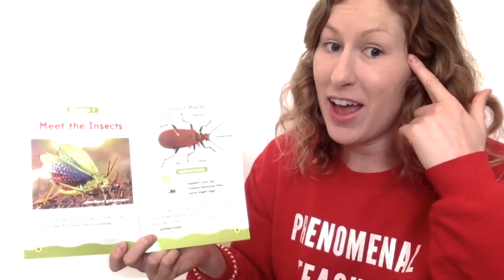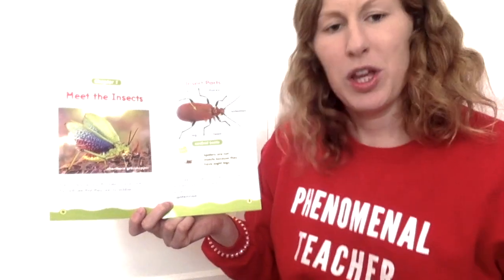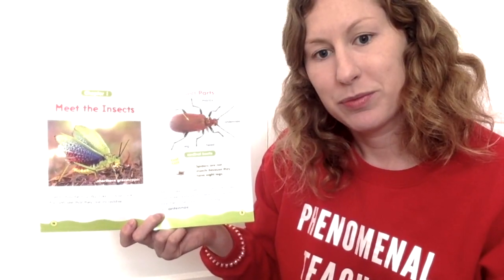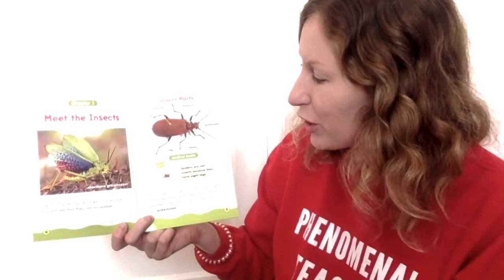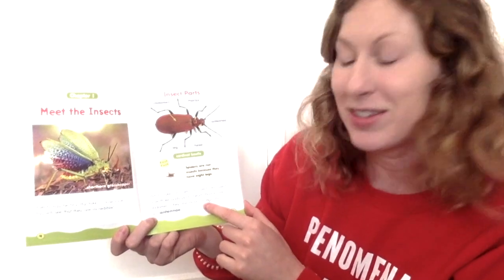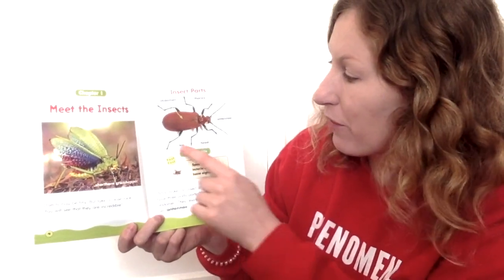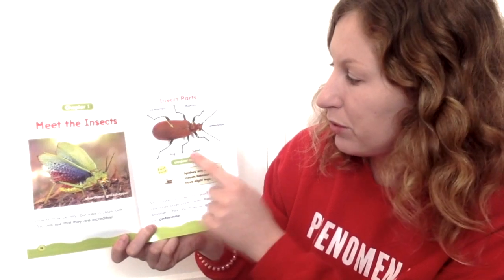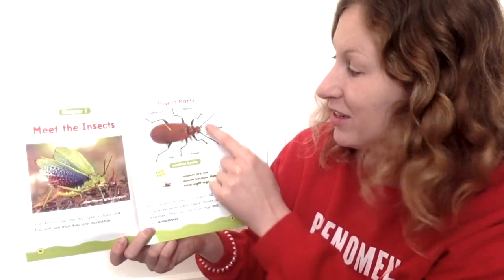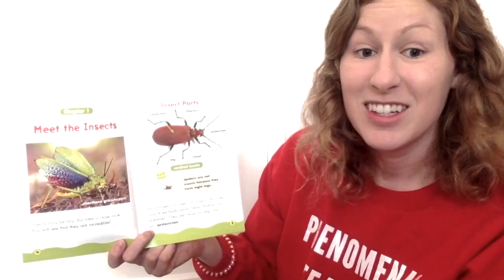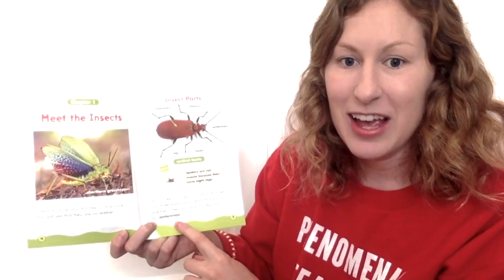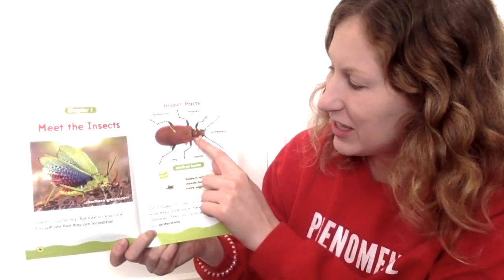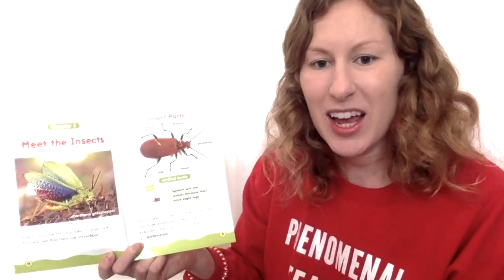We also have a head and an abdomen. What do you think our thorax would be? That's right, it might be our neck or our chest. We also know that insects have six legs — let's count the legs: one, two, three... six legs. We also know that insects have two antennae. Antennae are these things that stick out of the head, and they often help the bug feel. It's like another foot.